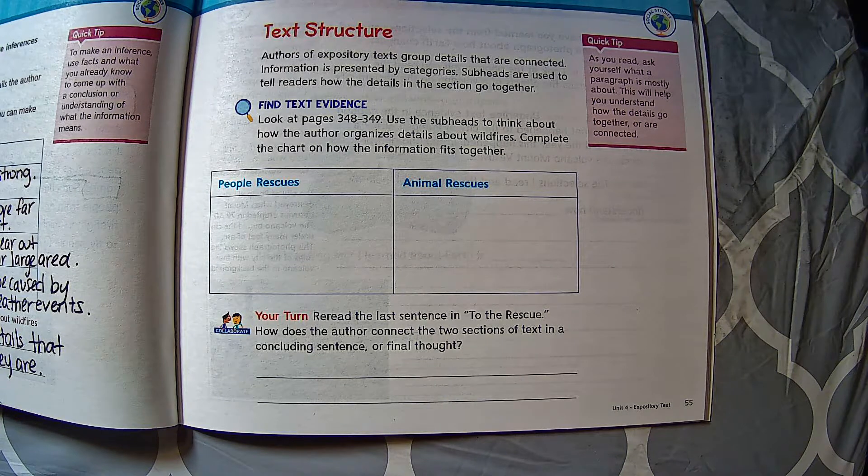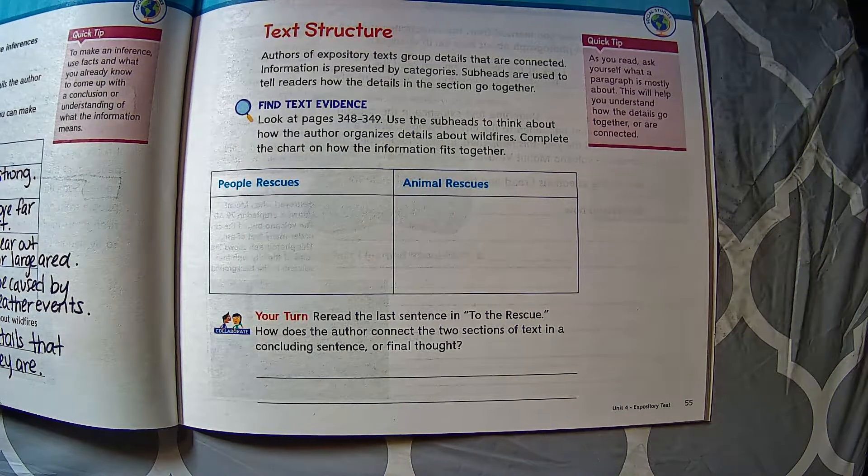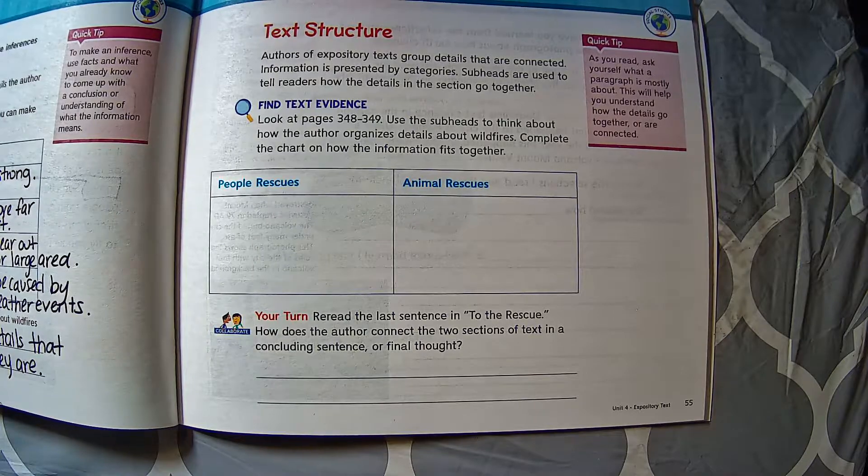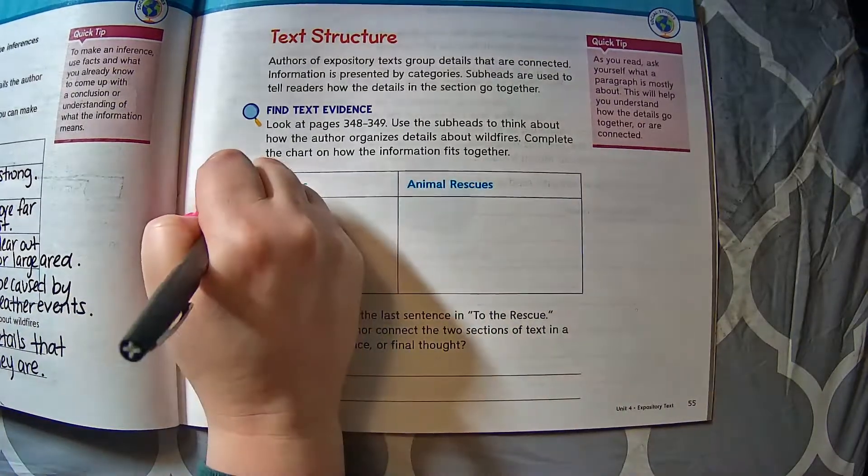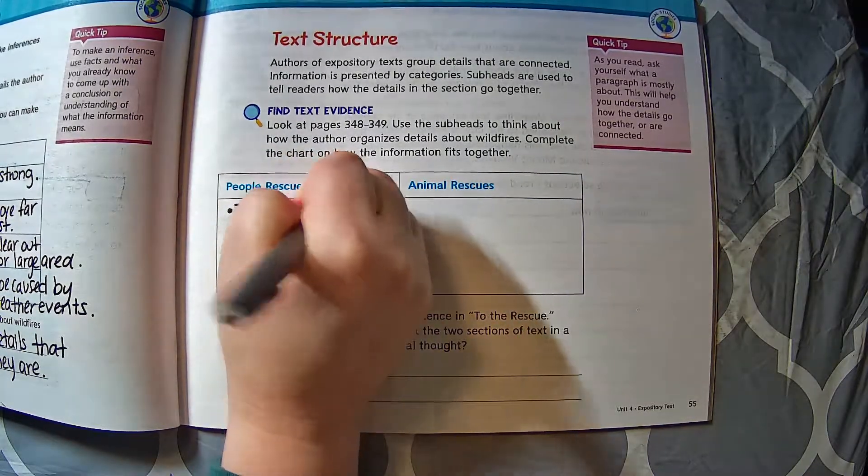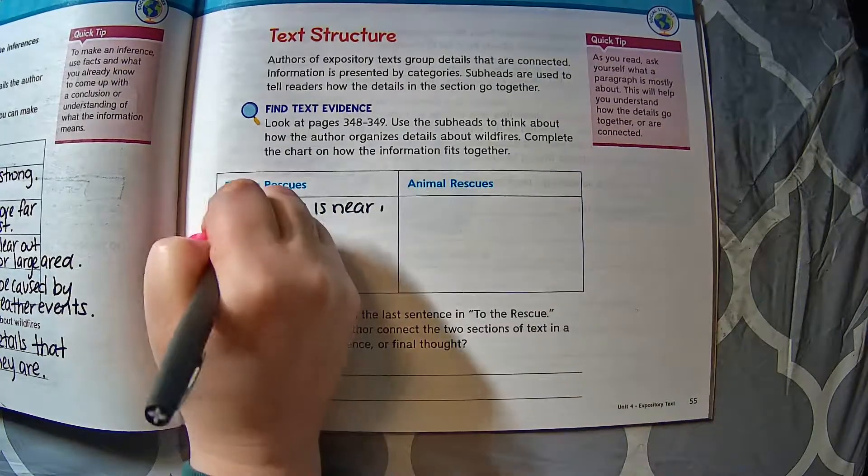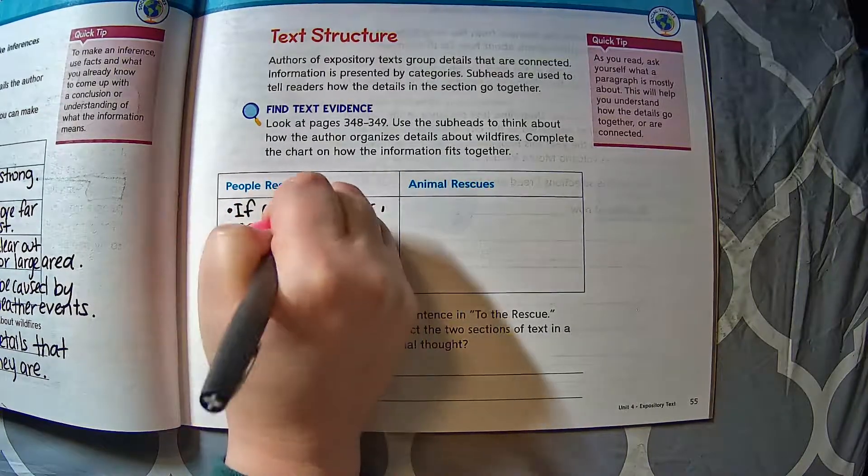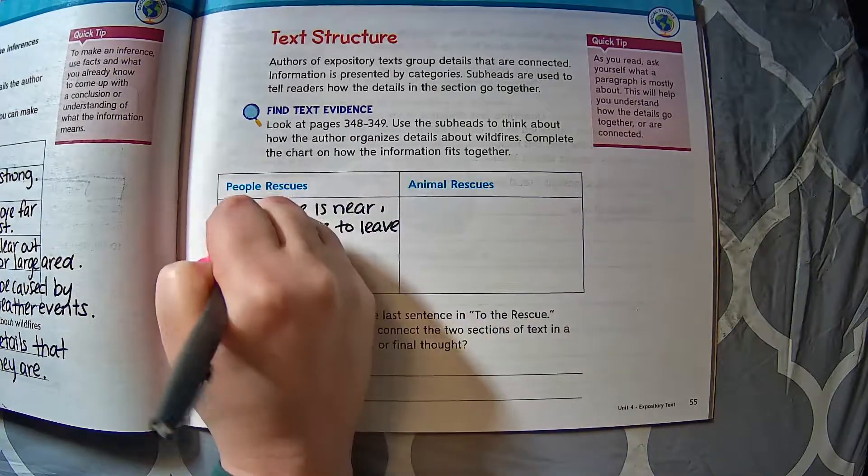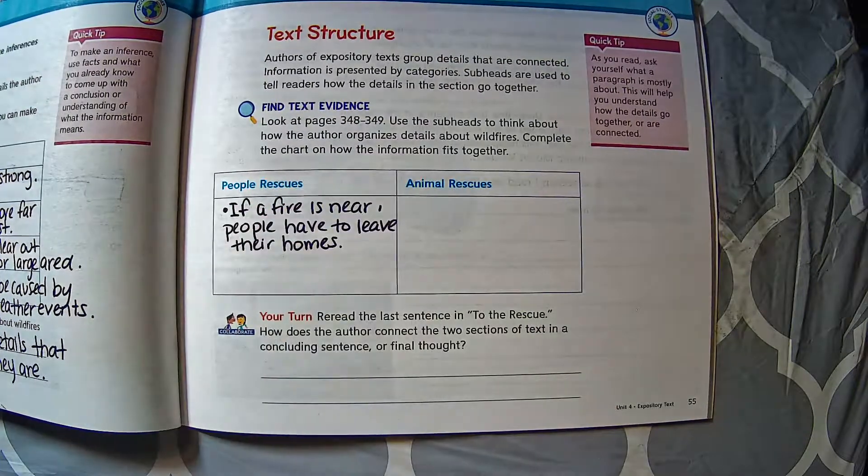Under people rescues, we're just going to complete and list out the information that's underneath that section. Under people rescues, if a fire is near, people have to leave their homes. So let's write that. If a fire is near, comma, people have to leave their homes.